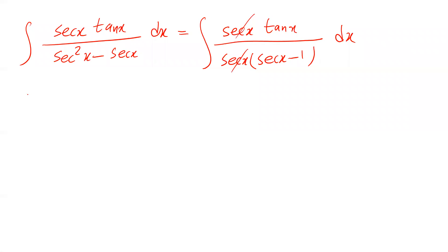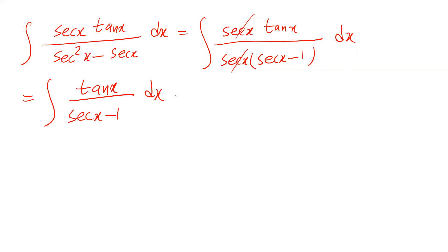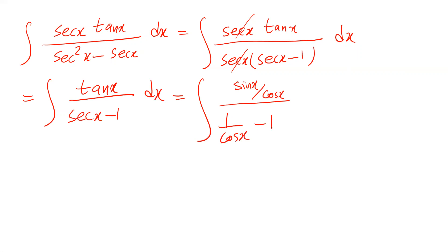So the secant x cancels out, and therefore this one you can write it as the integral of tangent x divided by secant x minus 1 dx. Also, you can write it as: instead of tangent x, write sine x divided by cosine x, and instead of secant x, write 1 divided by cosine x minus 1 dx.